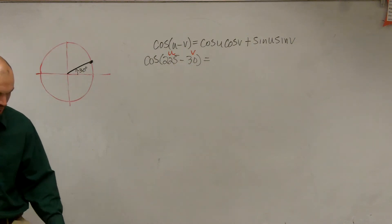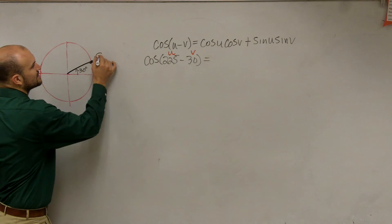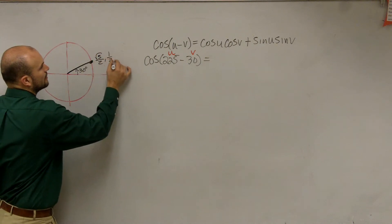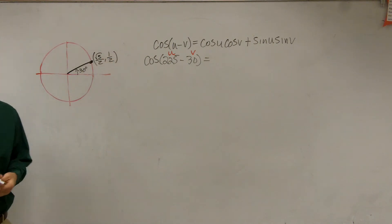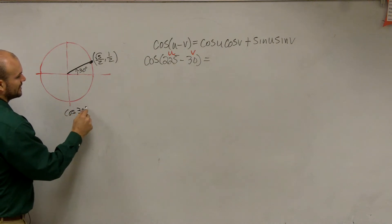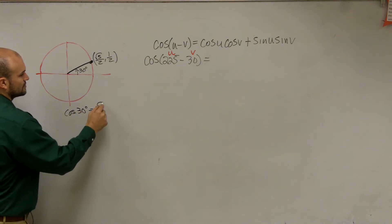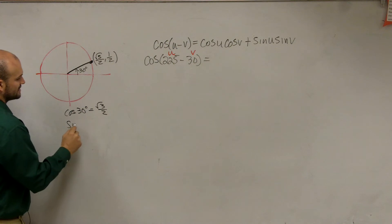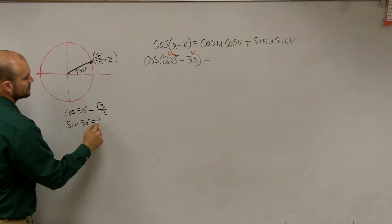So for this angle, our coordinate point is square root of 3 over 2 comma 1 half. Everybody agrees with me? So therefore, I can say that the cosine of 30 degrees is equal to square root of 3 over 2. The sine of 30 degrees is equal to 1 half.